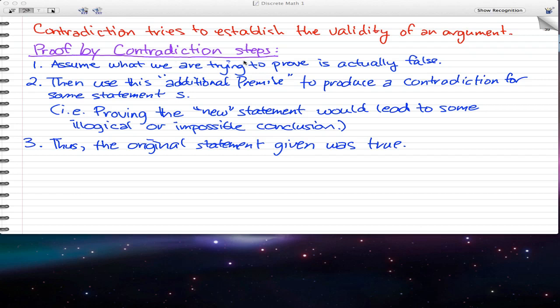Here's the proof by contradiction steps. The first step is assume that what we are trying to prove is actually false. The second step is, then we use this additional premise to produce a contradiction for some statement S. So proving this new statement will ultimately lead to some illogical reasoning or an impossible conclusion, and thus, in the third step, we find that the original statement given was actually true.